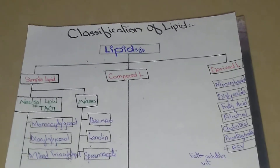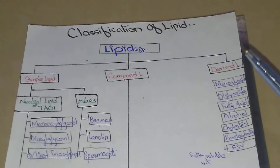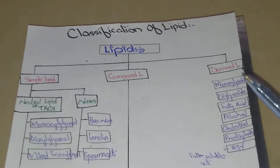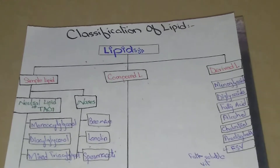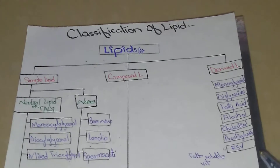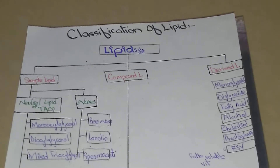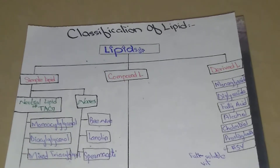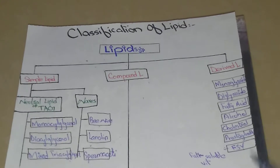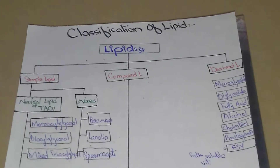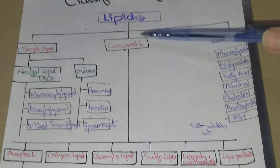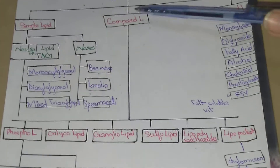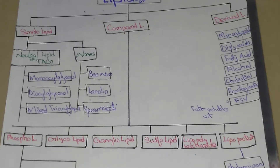Triacylglycerols are the most abundant lipids, comprising 85 to 90 percent of the body's lipids. Most triacylglycerols are stored in the adipose tissue and serve as the energy reserve of the body. Triacylglycerols are a highly concentrated form of energy — lipids produce nine calories per gram, as compared to carbohydrates and protein.